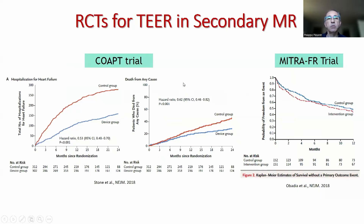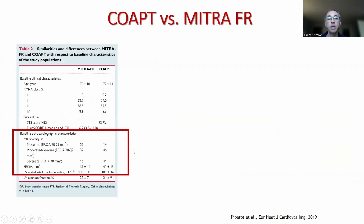We know these diametrically opposed results of the two trials assessing TER in secondary MR: COAPT, which was very positive, and MITRA-FR, which was completely negative. The main difference is that COAPT had more patients with true moderate to severe secondary MR, whereas MITRA-FR had a higher proportion with moderate MR. The LV also appeared more dilated in MITRA-FR, suggesting more advanced heart failure and LV dysfunction.